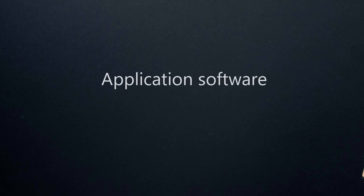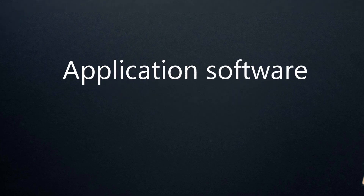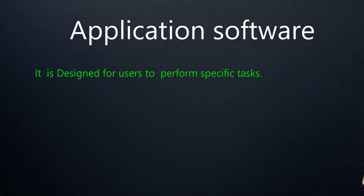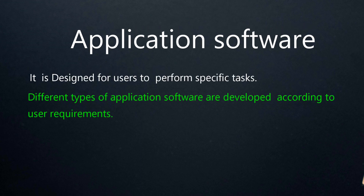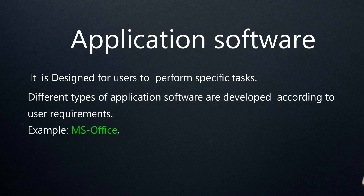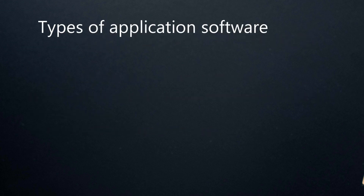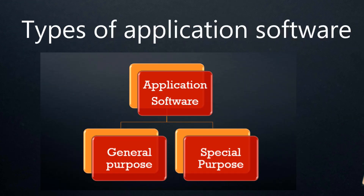Now, we are going to study application software. It is designed for users to perform specific tasks. Different types of application software are developed according to user requirements. For example, MS Office, games, etc. Now, we are going to study different types of application software: general purpose application software and special purpose application software.